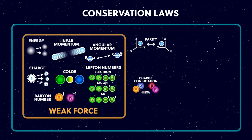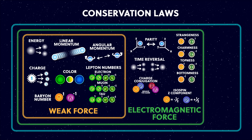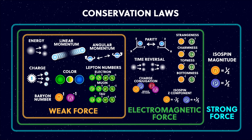Historically, physicists have been more and more frustrated that they need to relax these conservation laws, as it makes the overall standard model less and less elegant. The main takeaway point is that we've got different conservation laws which are conserved by different forces — anything within this box is conserved by the weak force, this box by the electromagnetic force, and this box by the strong force. Strangeness is a quantum number attached to strange quarks which is violated by the weak force but conserved elsewhere, and this is also true for the other flavour quantum numbers: charm, top, and bottom.